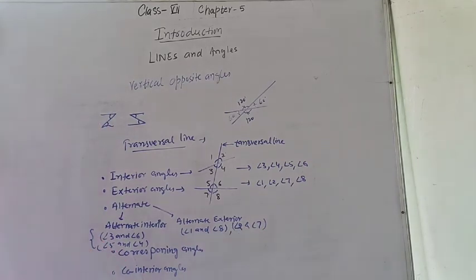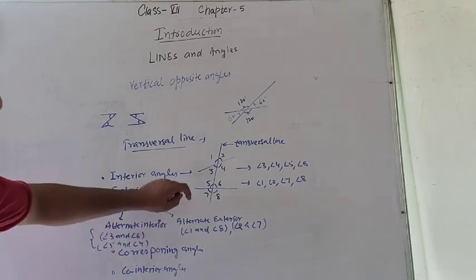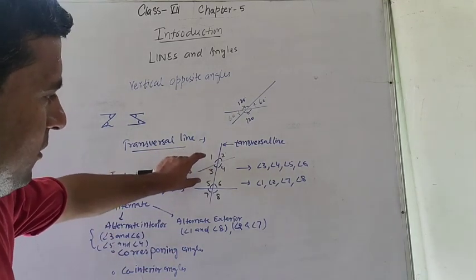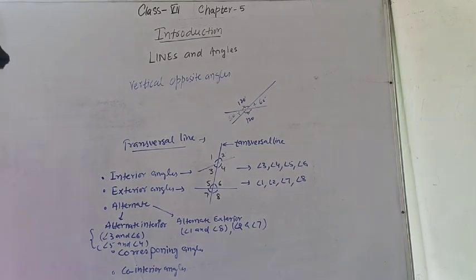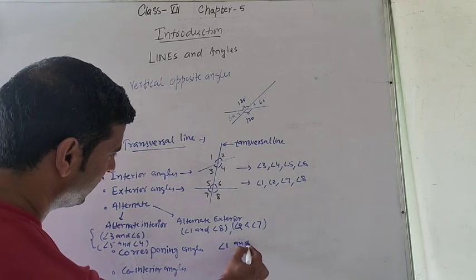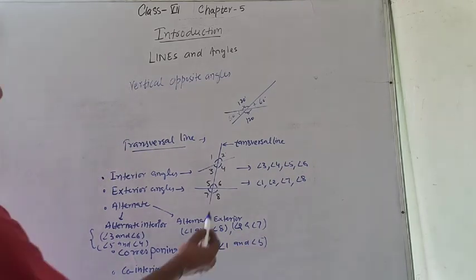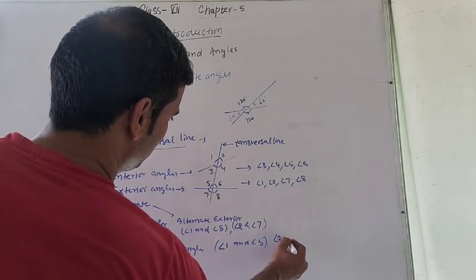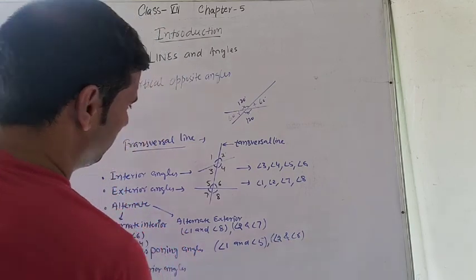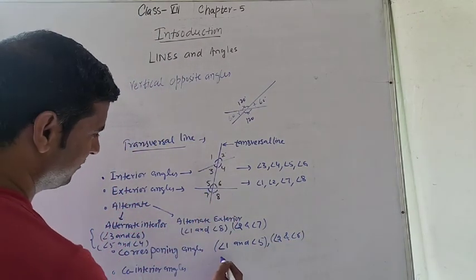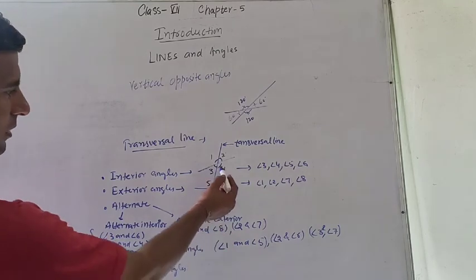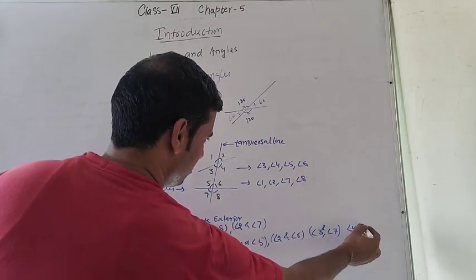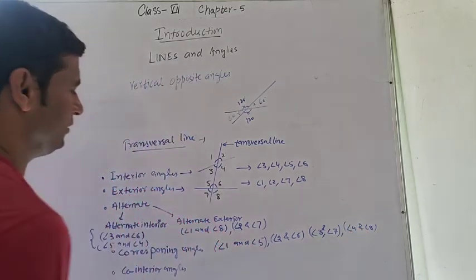Corresponding angles are the pairs: angle 1 and angle 5, angle 2 and angle 6, angle 3 and angle 7, and angle 4 and angle 8. These are the corresponding angles.